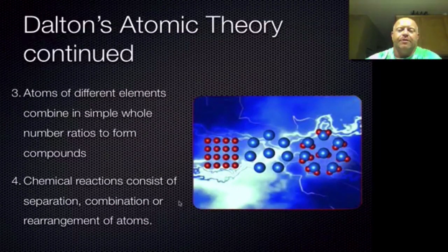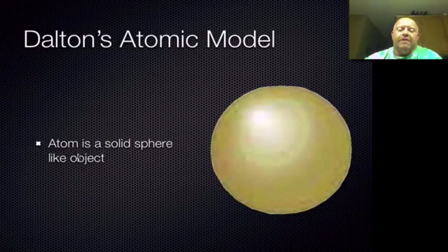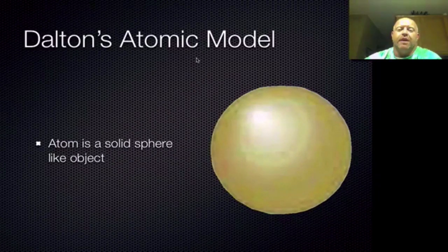From Dalton's atomic theory, he developed the first atomic model. His model was as basic as possible — he believed the atom was the smallest particle, indivisible and not separatable. As a result, his model depicts the atom as a solid sphere of mass that was indestructible and had no internal complexity. We now know this model isn't correct and that there's more complexity inside. However, it was a good starting point from a historical perspective, especially for the early 1800s.